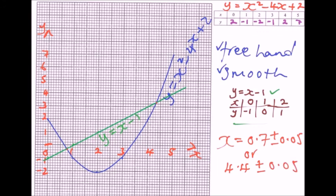The allowance of ±0.05 accounts for the accuracy of the drawing, and it is accepted in exams — you will still get full marks. Just make sure your value is not too far from the correct answer; it should be as close as possible. Completing all parts of this question earns you 10 marks.